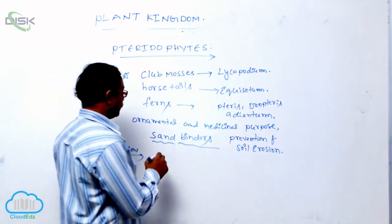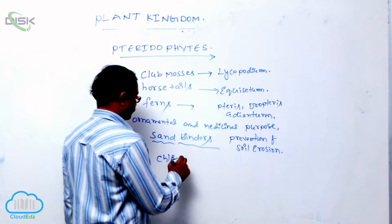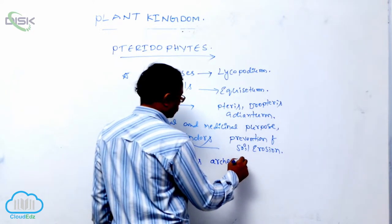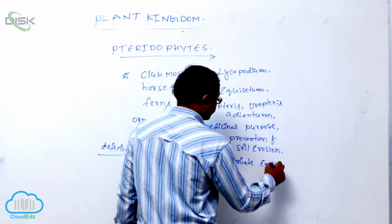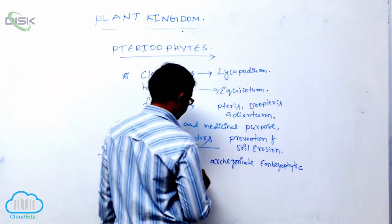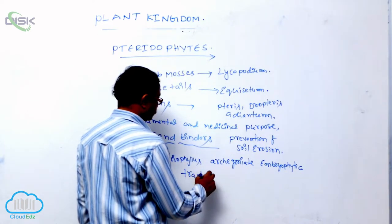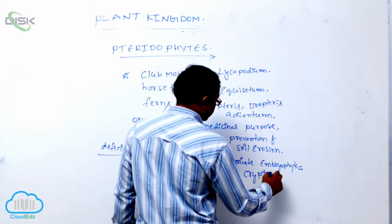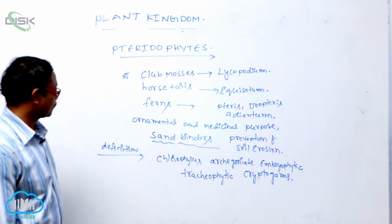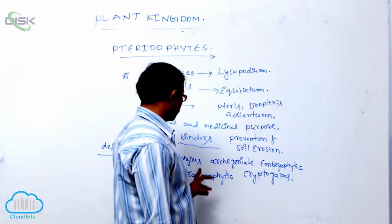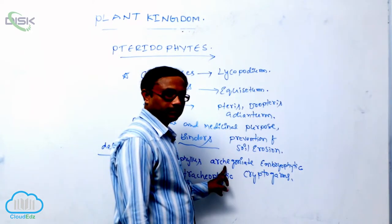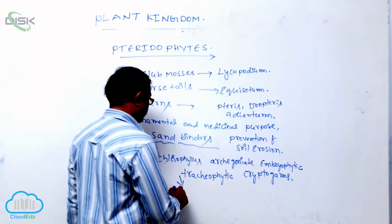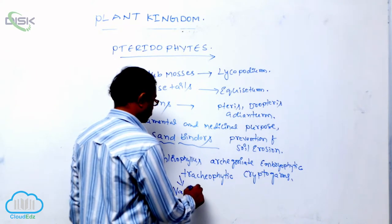Definition: they are chlorophyllous, archegoniate, embryophytic plants. Chlorophyllous means chlorophyll-containing, archegonia is formed, and embryo is also present. Tracheophytic means for the first time vascular tissues are formed in plants.